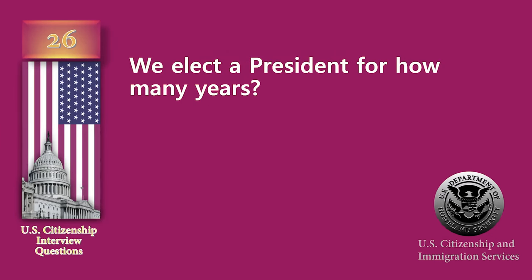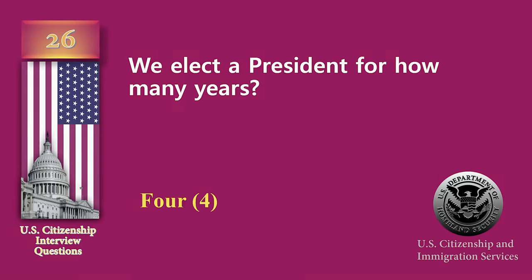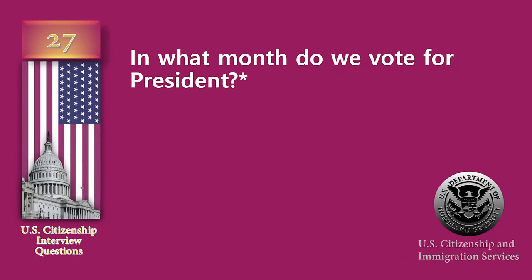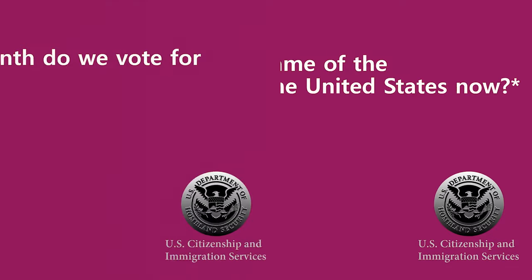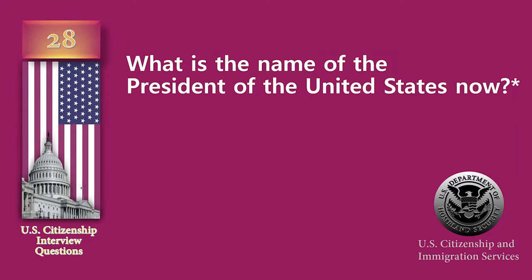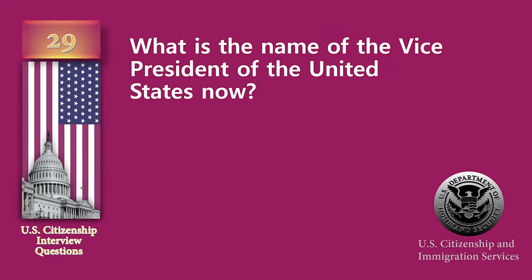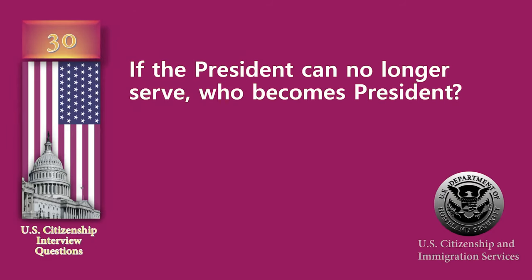We elect a president for how many years? Four. In what month do we vote for president? November. What is the name of the president of the United States now? Joe Biden. What is the name of the vice president of the United States now? Kamala Harris. If the president can no longer serve, who becomes president? The vice president.